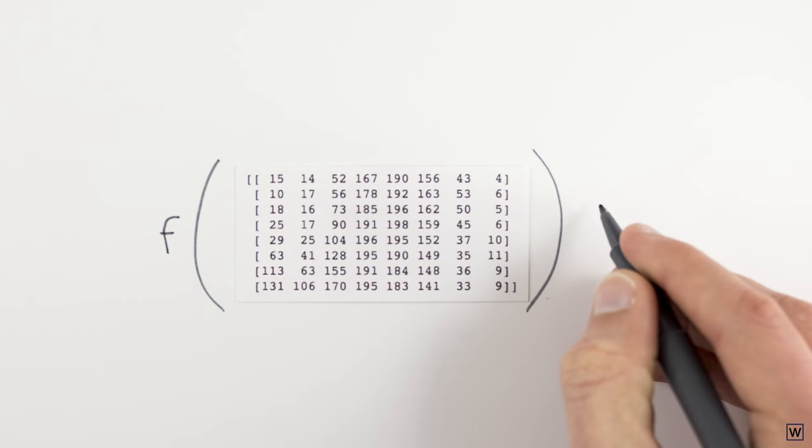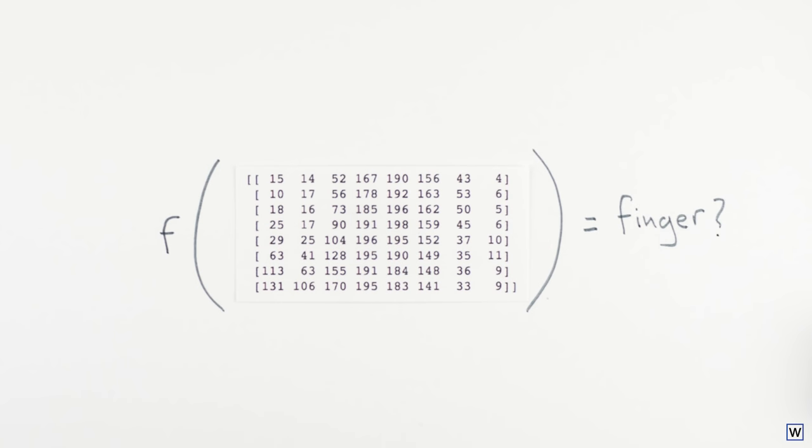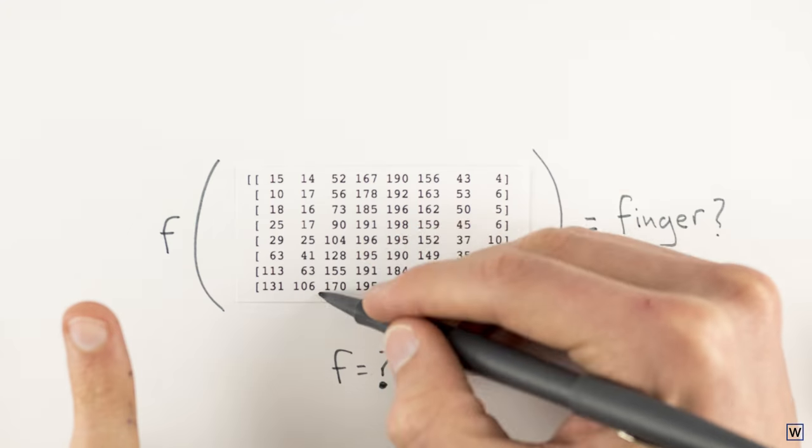Is there some mathematical equation or set of logical rules we can plug our 81 numbers into that will output the correct labels? If so, how do we find it? How do we even start? What patterns in our 81 numbers should we look for? How do we decide which patterns represent fingers?